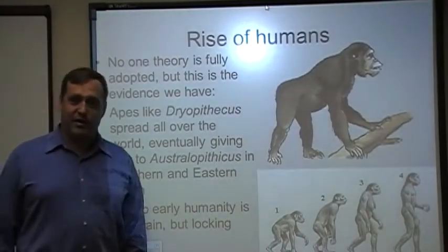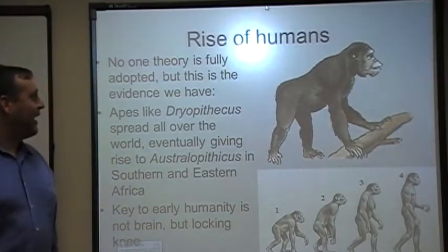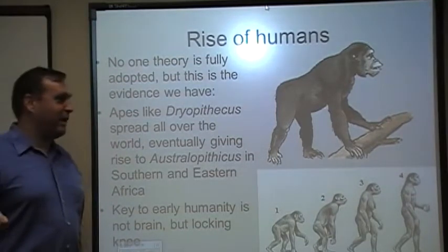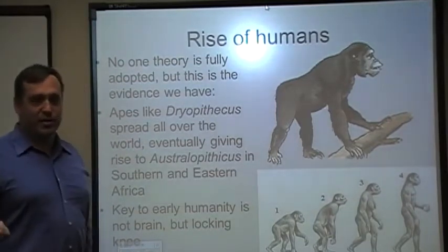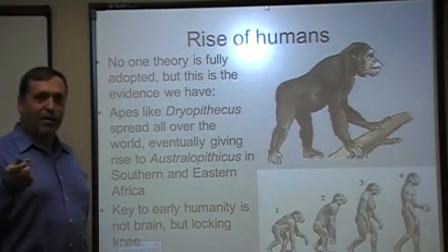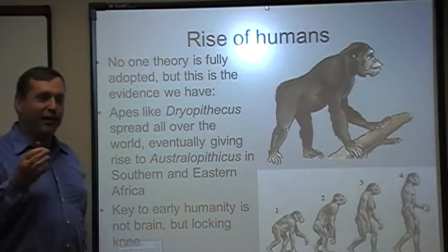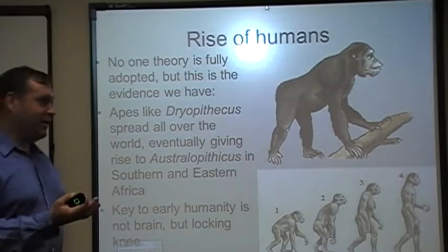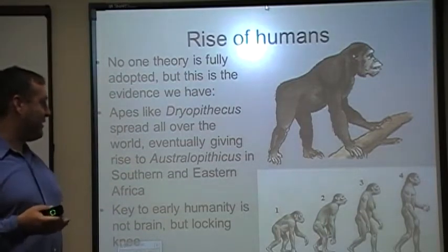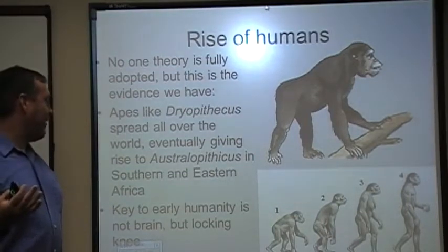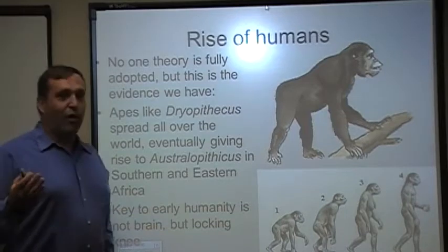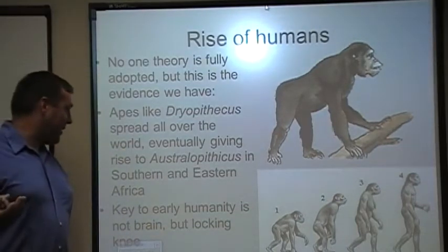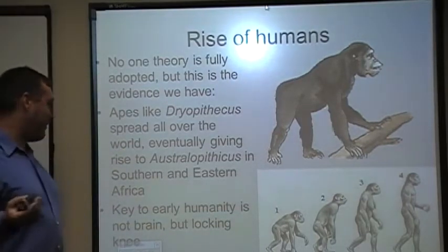To start with uncivilization, we've got to start with non-humans. When we talk about the rise of humanity, nobody is really 100% sure of what we're talking about — a number of scientific theories that sort of debate each other. You get proto-humans like the Dryopithecus that spread out all over the world, eventually giving rise to a different genus, Australopithecus, in southern and eastern Africa.